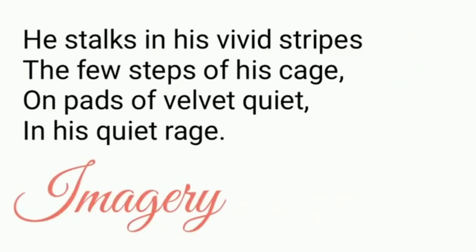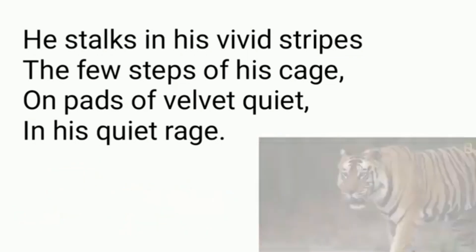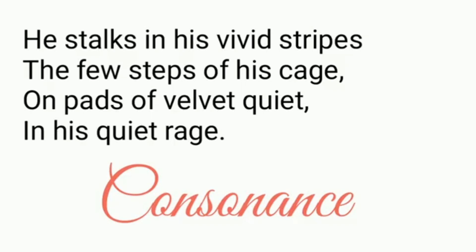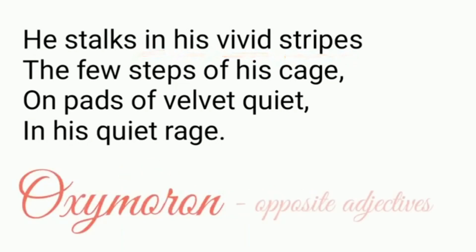Then we have imagery, where the poet is trying to create an image of the tiger, and we can clearly visualize the tiger walking in vivid stripes. Then we have consonance — when you read the lines 'stalks, vivid stripes,' the sound 's' is quite evident. And then we have assonance — the repetition of the 'I' sound in 'in his vivid stripes.' The last line also has oxymoron, which means the use of adjectives opposite in meaning — you can see 'quiet rage' in the last line, which is opposite in meaning.